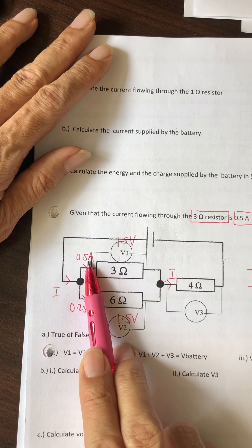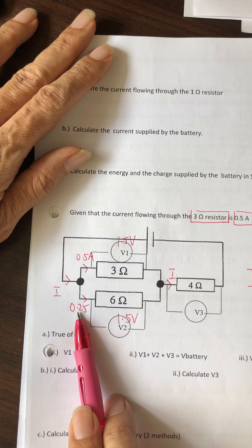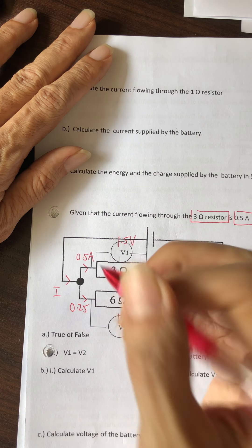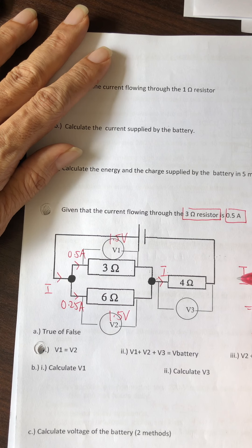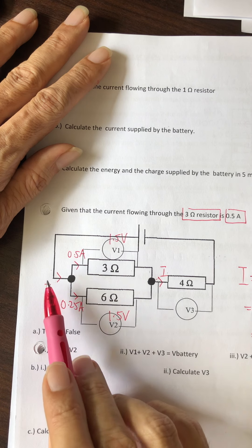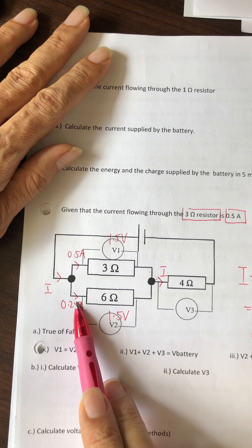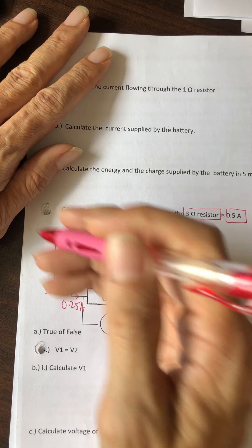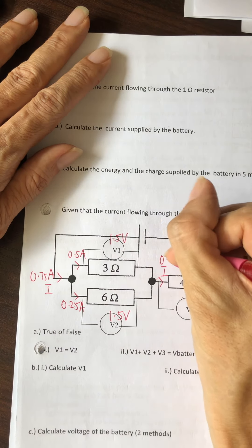Some students prefer to use proportionality because they see 3 ohms at 0.5 amperes, so if this has double the resistance, the current goes down by two times. They prefer to do it that way, but as I said, please use the formula - it's much easier.